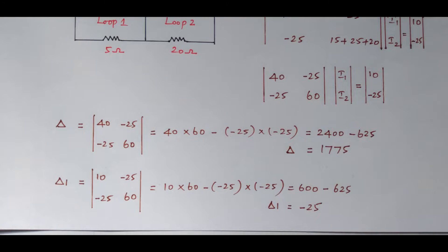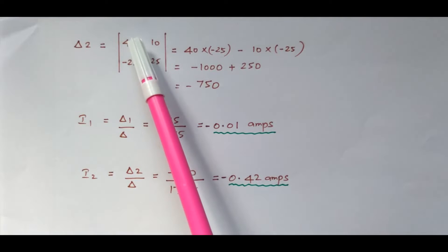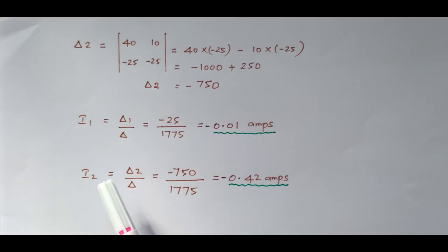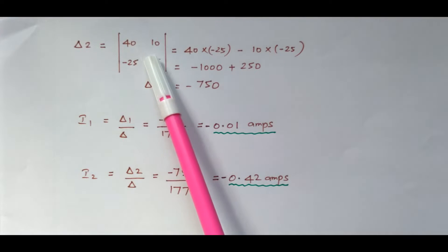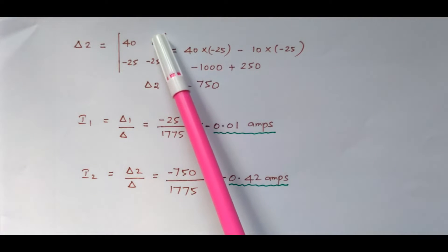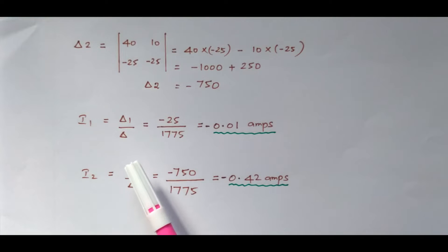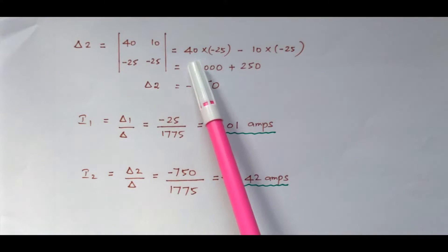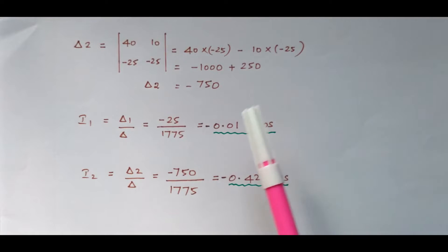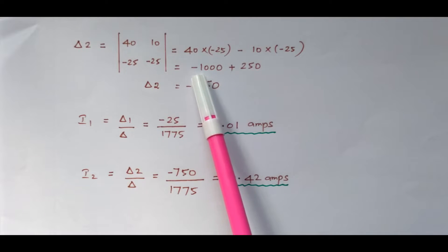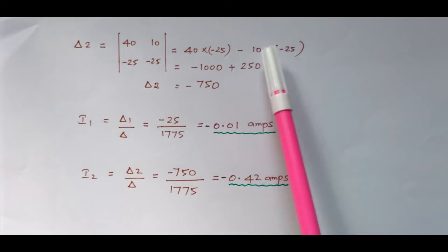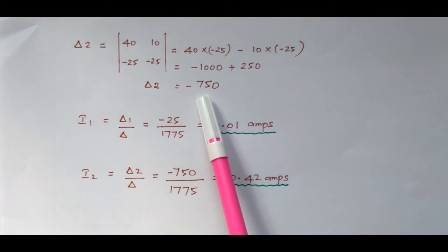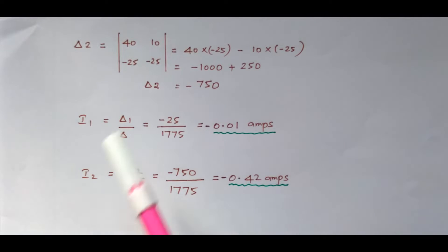For delta 2, the first column stays as [40, minus 25] and the second column is replaced by the voltage matrix [10, minus 25]. The determinant is: 40 × (minus 25) minus 10 × (minus 25). That gives minus 1000, and the two negatives make the second term positive plus 250. So delta 2 = minus 1000 + 250 = minus 750.